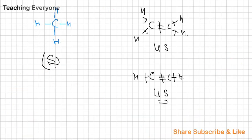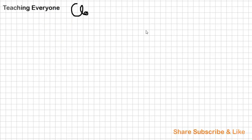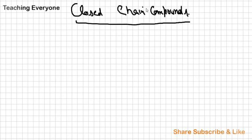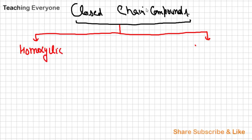Second one is closed chain compound. What are closed chain compounds? In which first and last carbon atoms are bonded to each other. So these are of two types: homocyclic and heterocyclic. From the name homo means same, when ring is completed with the same atom, that is with a carbon atom, these are called homocyclic.